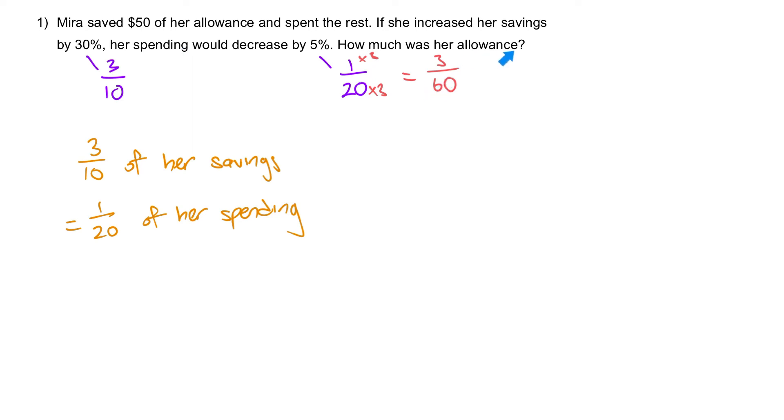In total, her allowance amount is 70 units. How do we figure out what is the value for 70 units? We know that at the beginning she has 10 units of savings which is equal to $50.